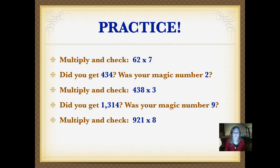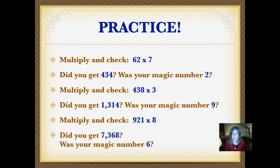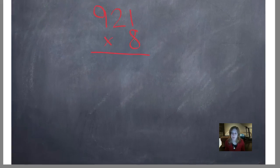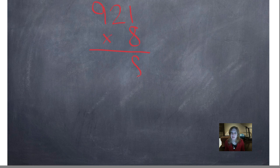Here's our last problem. Multiply and check 921 times 8. Go ahead again, pause, and push play when you're ready. Did you get 7,368? Was your magic number 6? Let's see how we did it. Remember, begin multiplying in the ones place. 8 times 1 is 8. 8 times 2 is 16. Put my 6 down here and carry my 1. 8 times 9 is 72, plus 1 is 73. That's a sloppy 3.